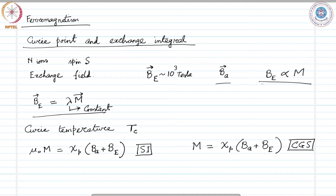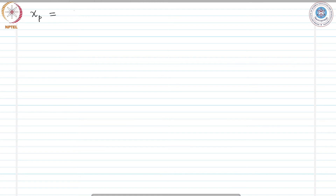This is the obvious expression according to the definition of susceptibility. The magnetization equals a constant susceptibility times a field, but only if the fractional alignment is small. If we have all the spins aligned along one direction, then this expression does not hold good.